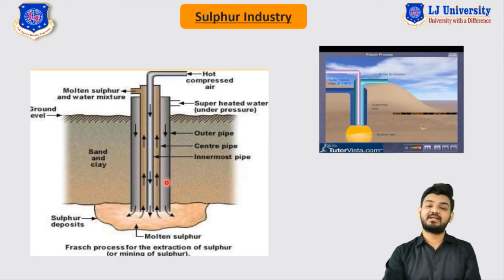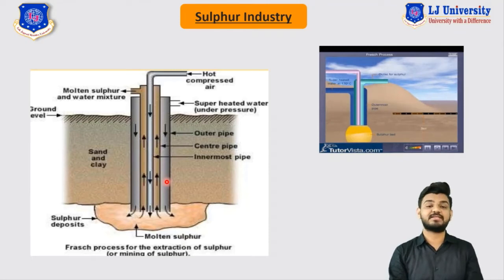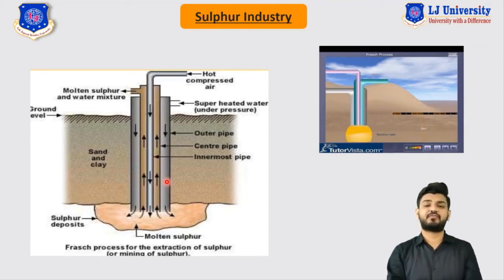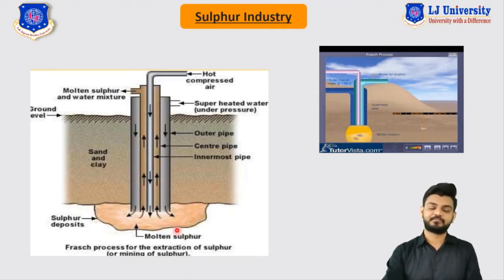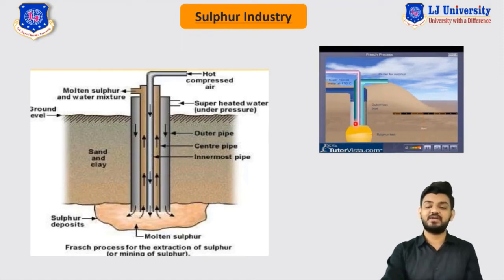The monoclinic sulphur has a melting point of around 120°C, while the rhombic crystal of sulphur has a melting point of around 112°C. So if we pass hot water at a temperature of around 150 to 160°C, it will melt down the sulphur present in the dome. We pass this hot water at very high temperature and pressure — around 160°C at 25 atm. As seen in this animation, the hot water passes through and melts the sulphur present in the dome.